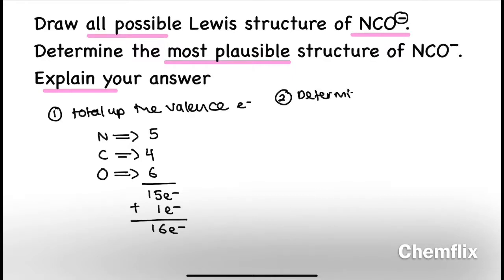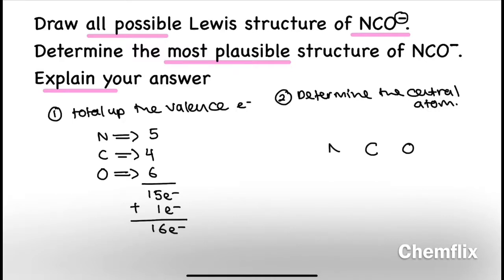The second step would be to determine the central atom. The central atom is the least electronegative atom, so in this case that would be carbon. Place your oxygen and nitrogen surrounding the carbon and connect them with a single bond.